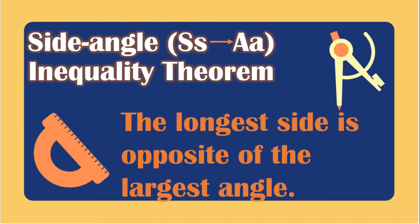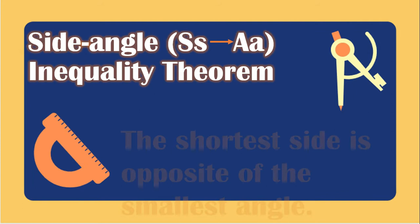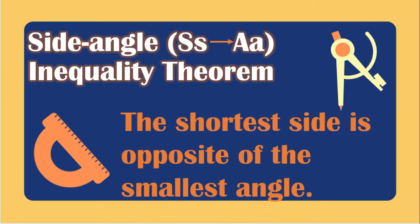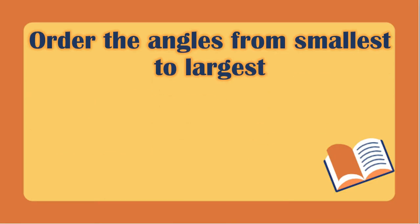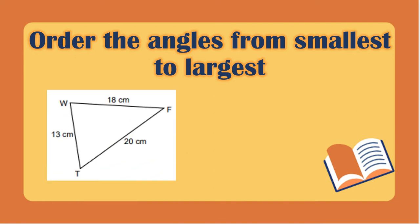We already know that the longest side is opposite the largest angle and the shortest side is opposite the smallest angle. We will order the angles from smallest to largest. Using this figure, the shortest side is 13 cm and its opposite is angle F. Next is 18 cm, whose opposite is angle T. The longest side is 20 cm and its opposite is angle W.